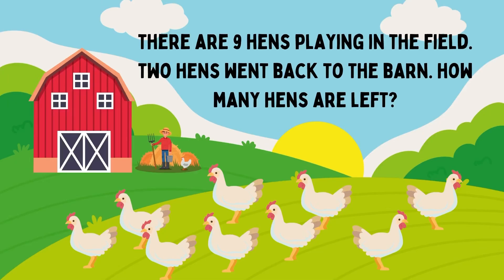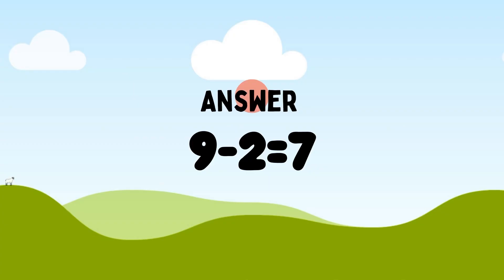Next one. There are 9 hens playing in the field. 2 hens went back to the pond. How many hens are left now? So, total is 9 hens minus 2 hens left. 9 minus 2 is equal to 7. So, 7 hens left now.